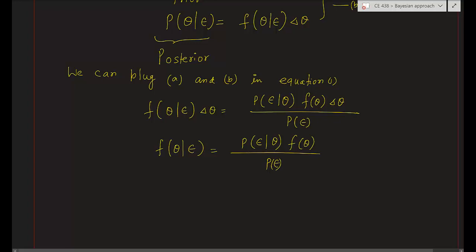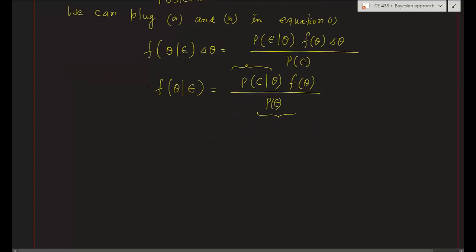Now let us focus on two more terms — the likelihood and the normalization constant — and write these two terms in terms of the PDF.